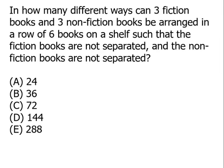How many different ways can three fiction books and three nonfiction books be arranged in a row of six books on a shelf such that the fiction books are not separated and the nonfiction books are not separated?